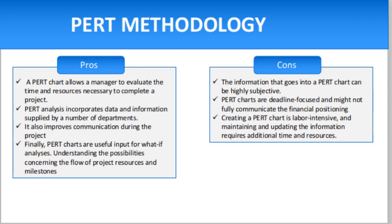Regarding the advantages: a PERT chart allows a manager to evaluate the time and resources necessary to complete a project. It also allows the manager to track required assets during any stage of production. PERT analysis incorporates data and information supplied by a number of departments, encouraging department responsibility and identifying all responsible parties across the organization. It also improves communication during the project, allows an organization to commit to strategically relevant projects, and is a useful input for what-if analysis — helping management achieve the most efficient and useful project path.